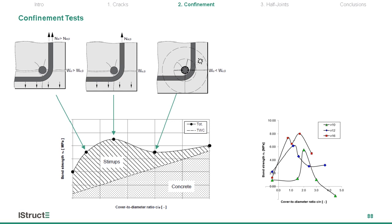We studied the relative contribution of confinement from the concrete and the transverse steel through a combination of experimental and analytical results. We found an optimum cover-to-diameter ratio, which led to an optimum amount of cracking and a maximum uplift from shear links. In other words, more cover is not necessarily good news, and a small amount of cracking is in fact beneficial as it activates the stirrups.